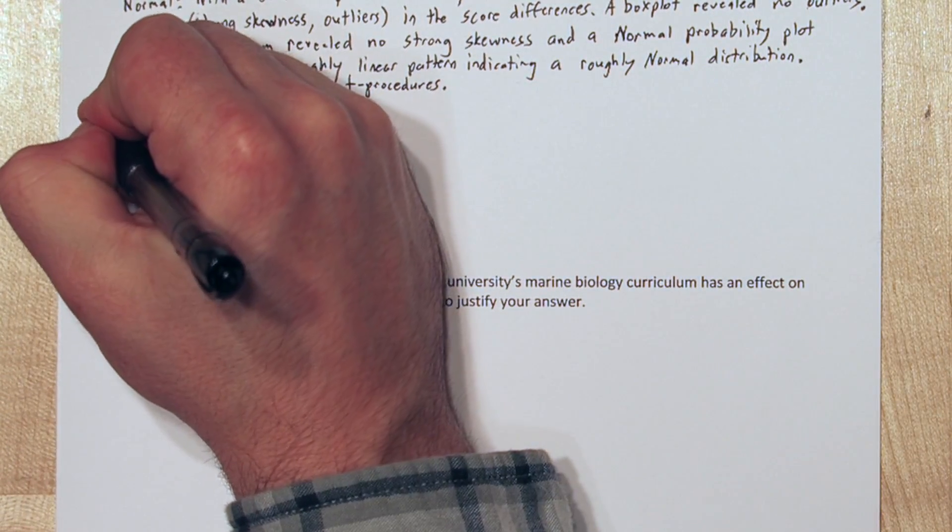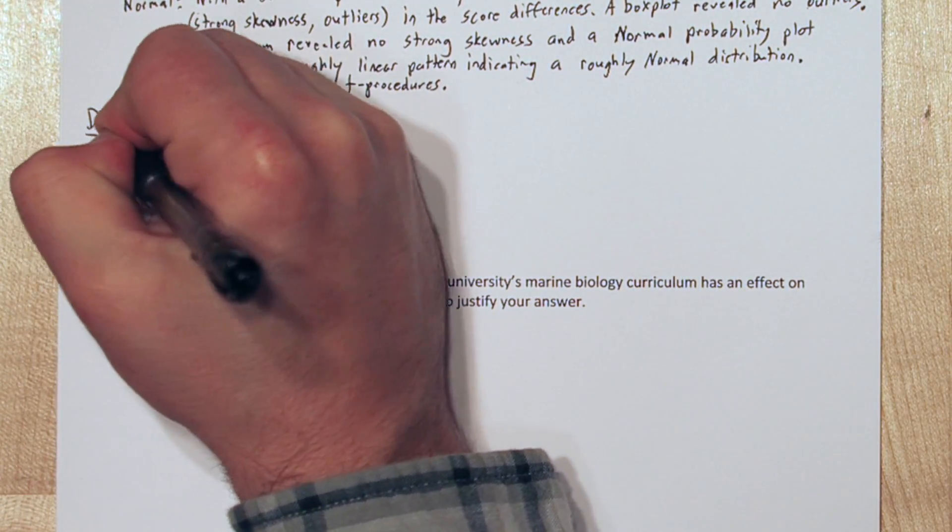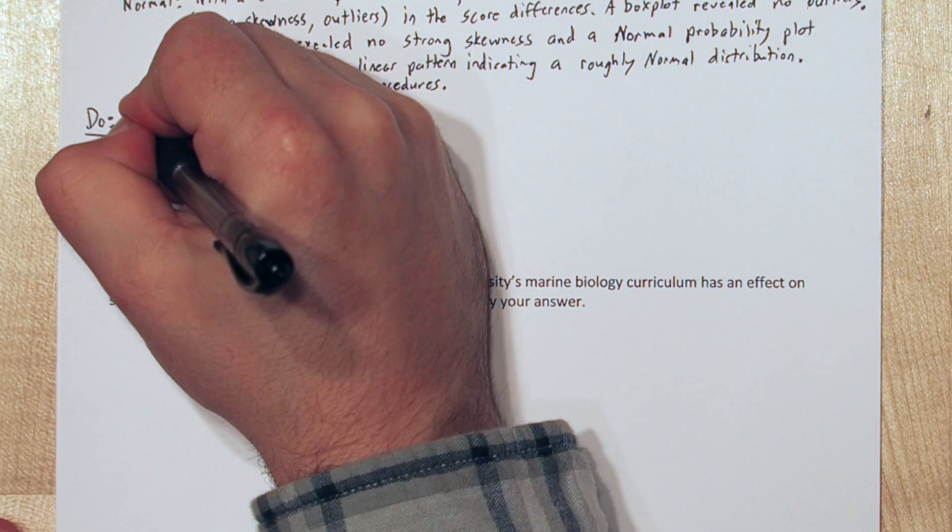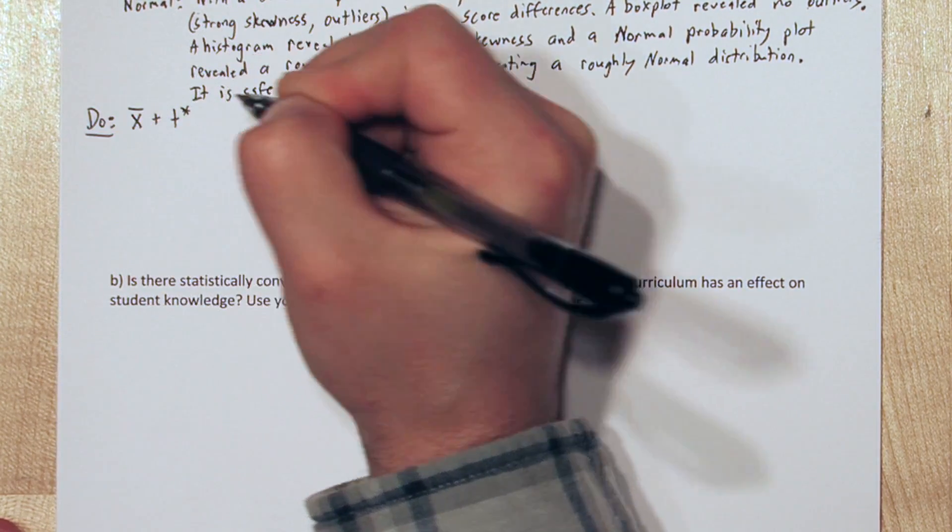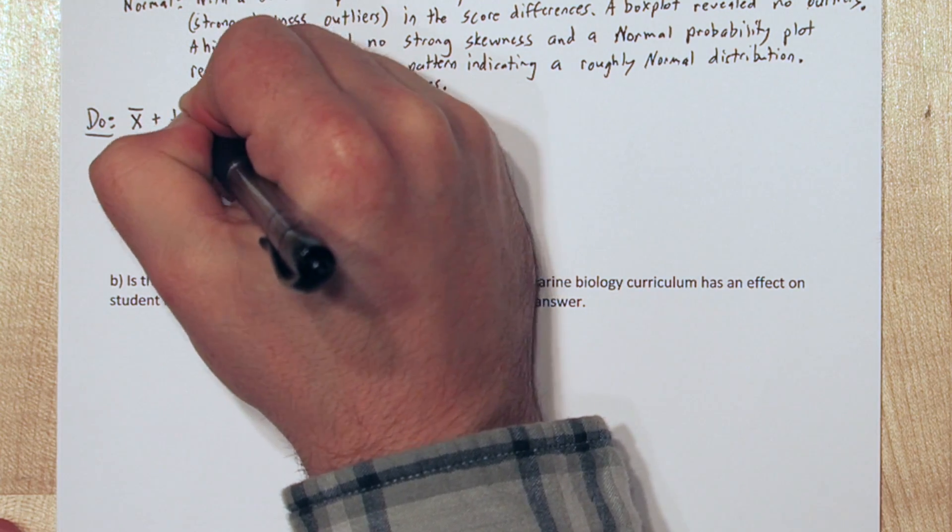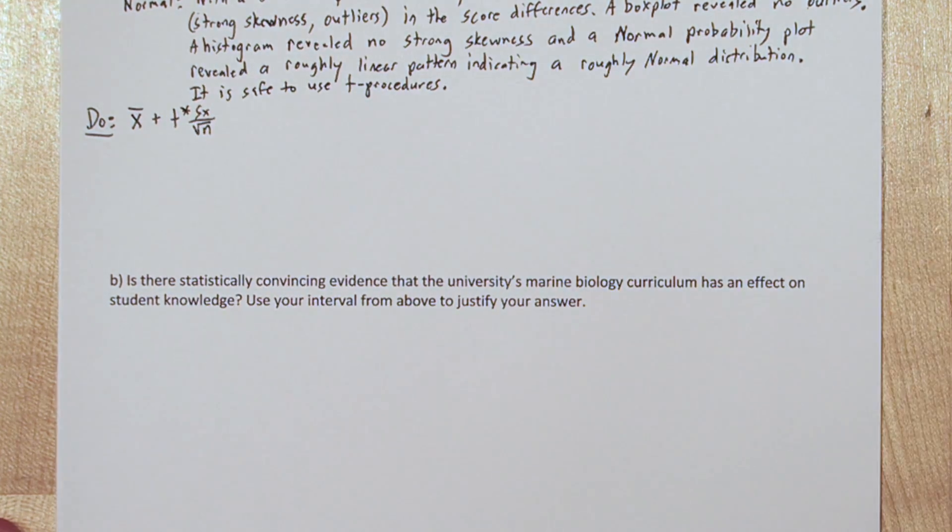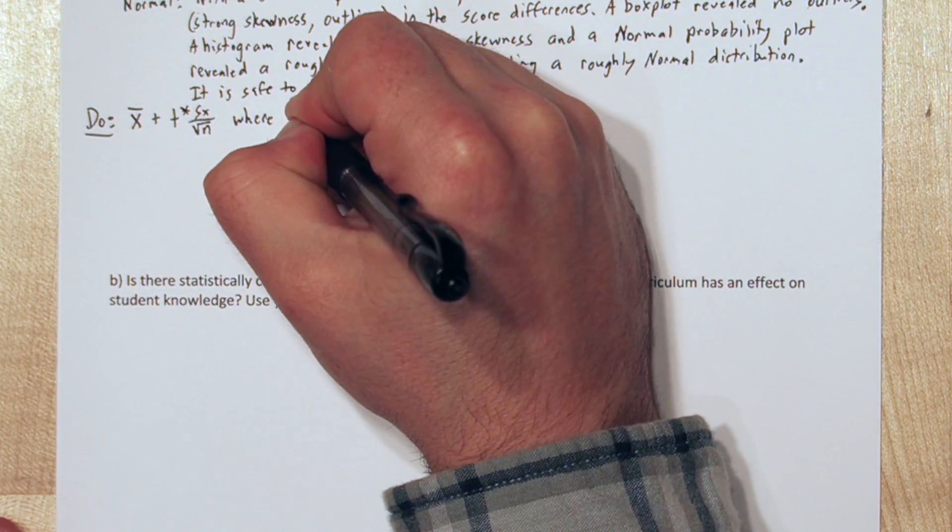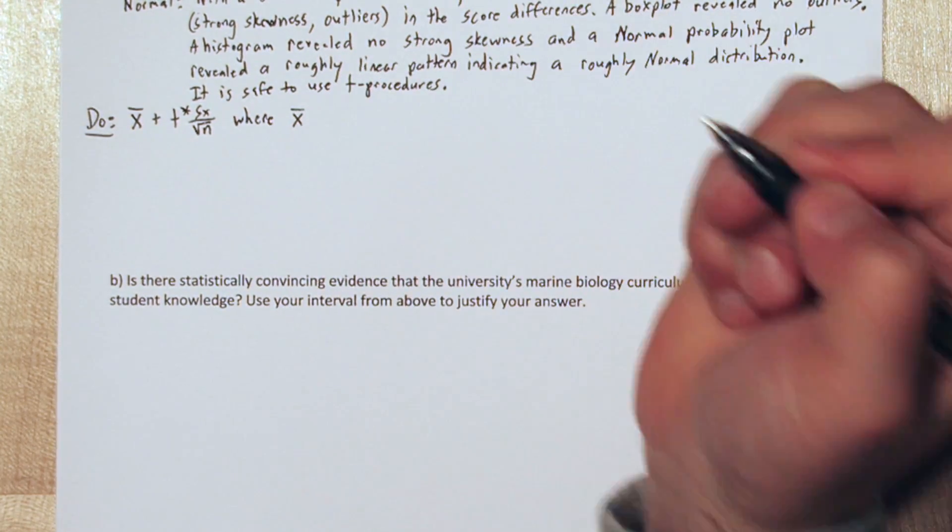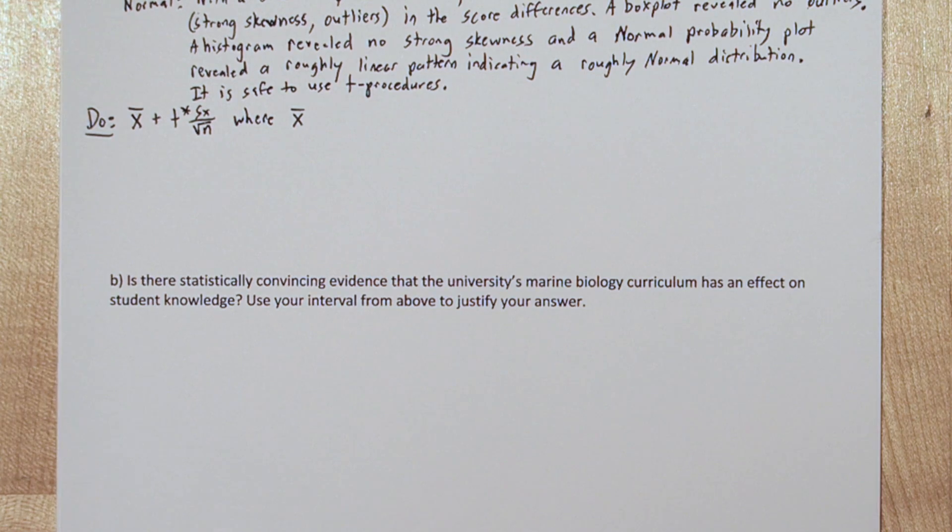Now we're ready to construct our confidence interval. All confidence intervals are a point estimate, in this case x bar, the sample mean, plus or minus a margin of error, which in this case is t star, our critical value, times our standard error, the sample standard deviation divided by the square root of n. So, we need a lot of information to construct our confidence interval.